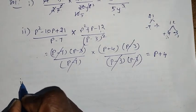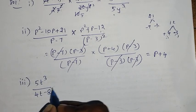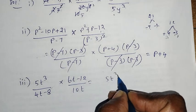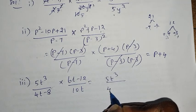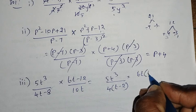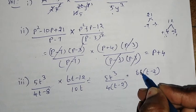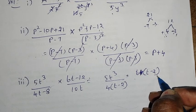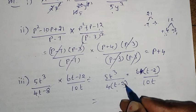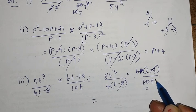Next, third sum. 5T cube divided by 4T minus 8 into 6T minus 12 divided by 10T. Equal to 5T cube divided by 4 common, T minus 2, into 6 common, T minus 2, divided by 10T.